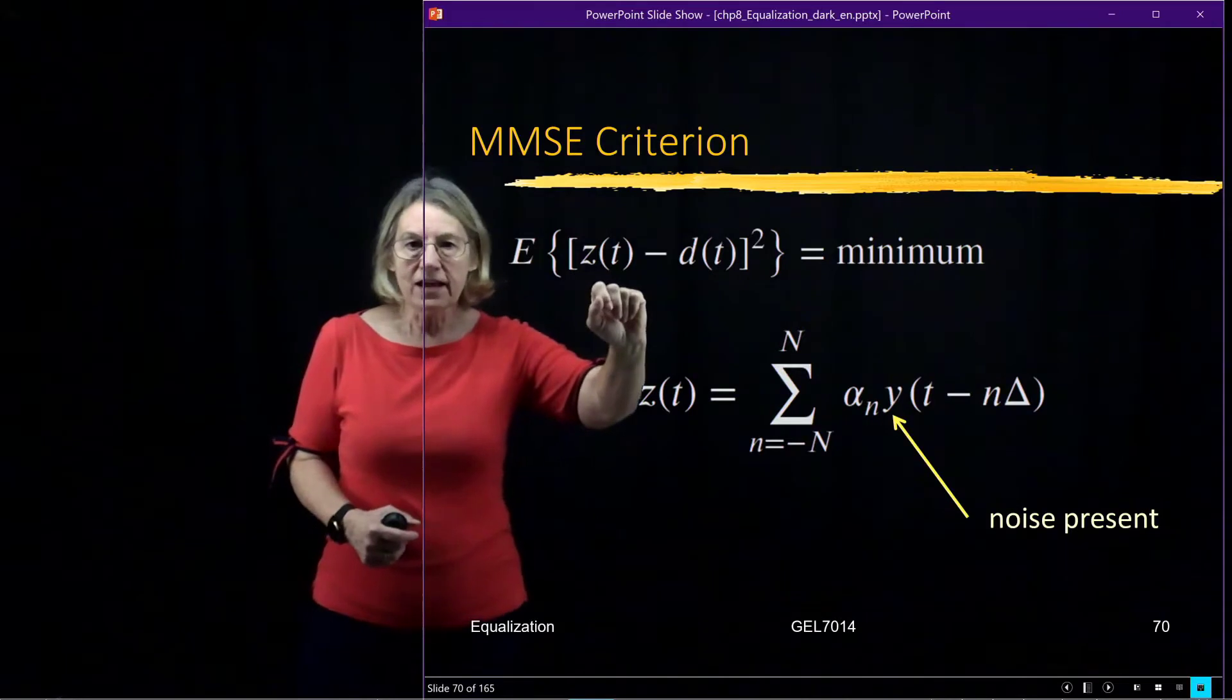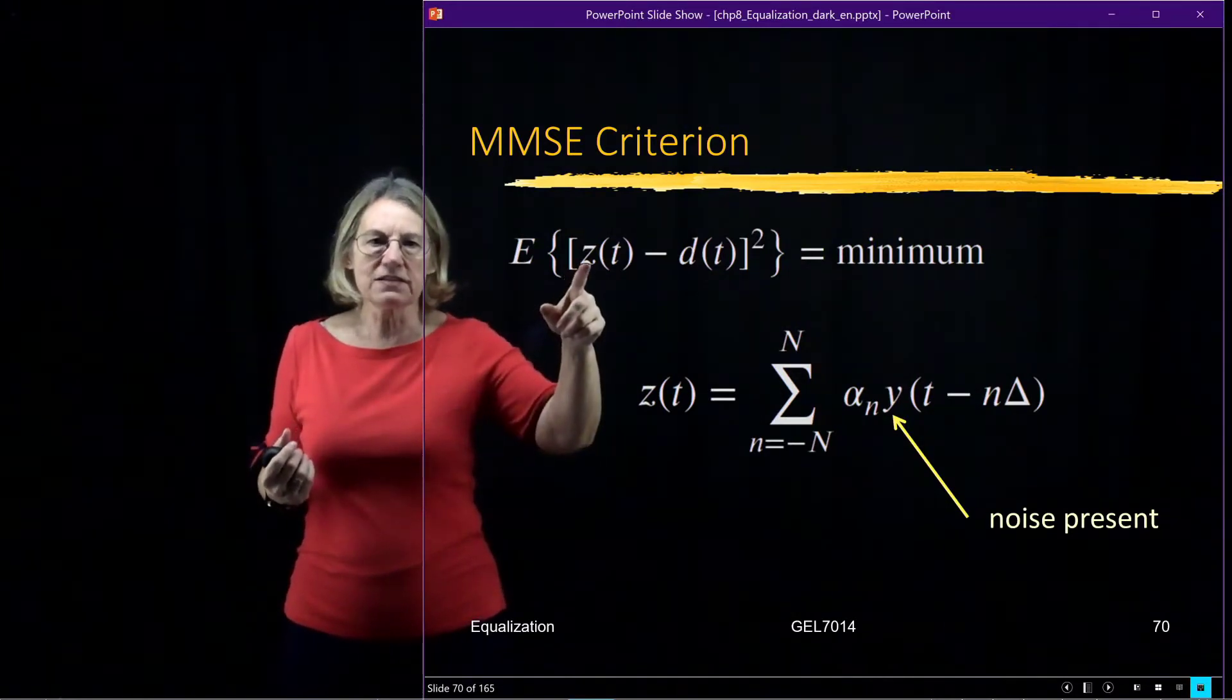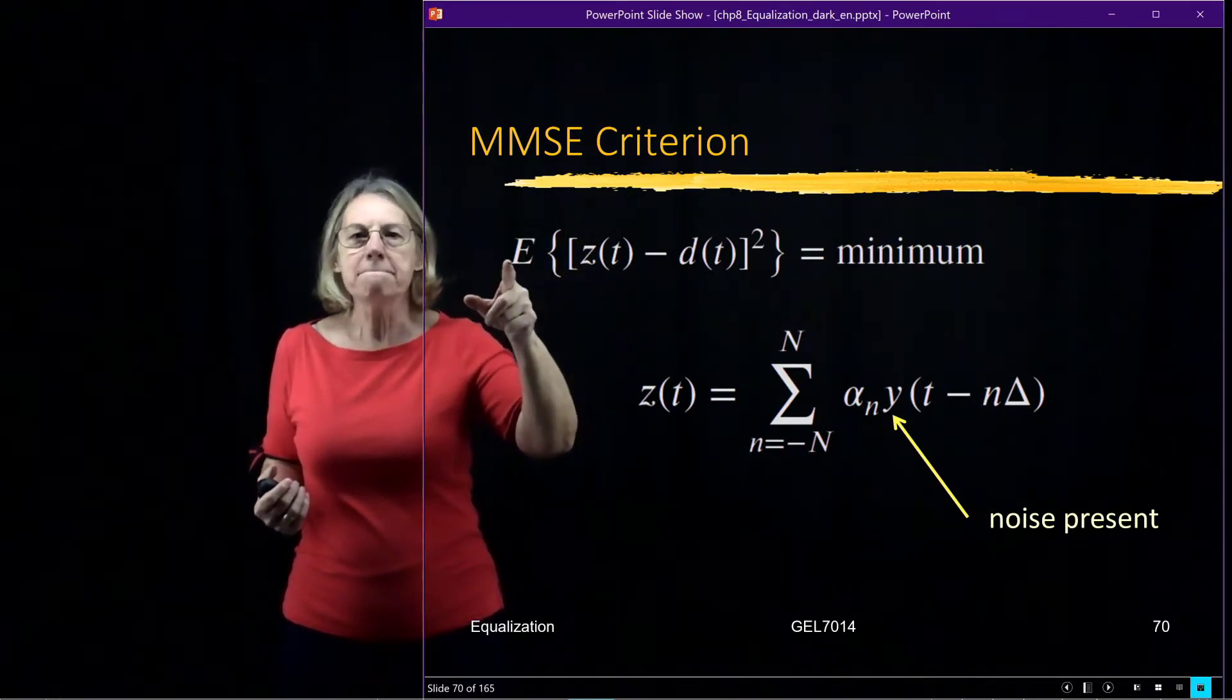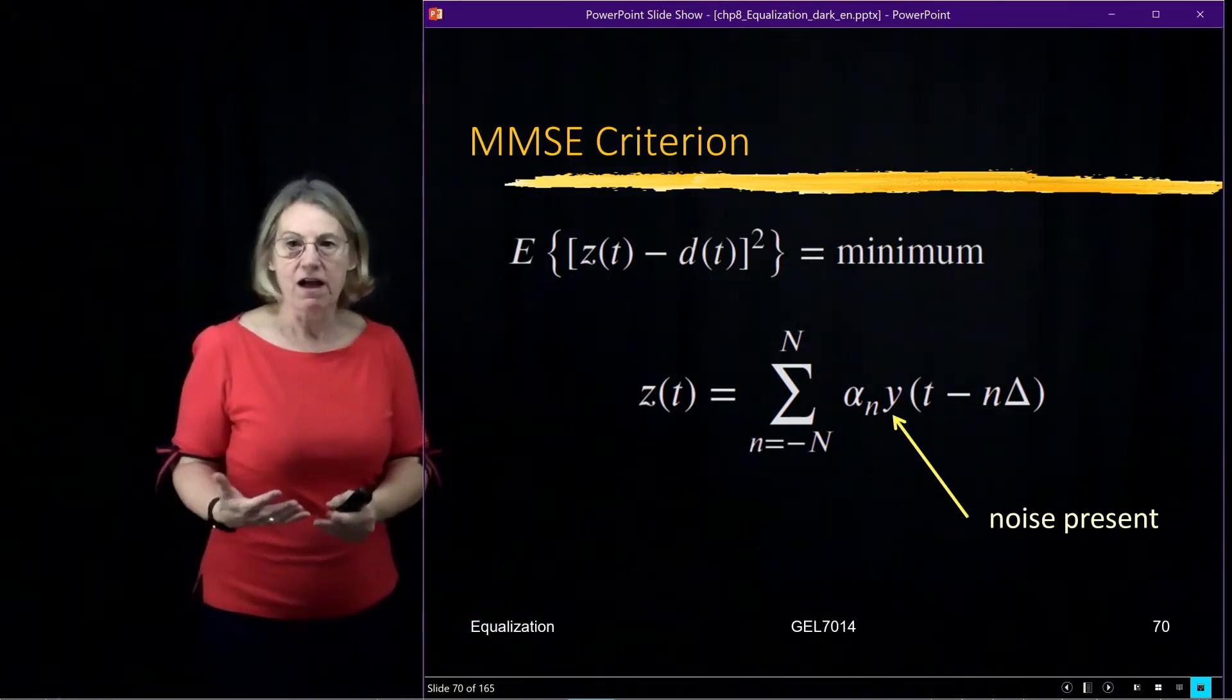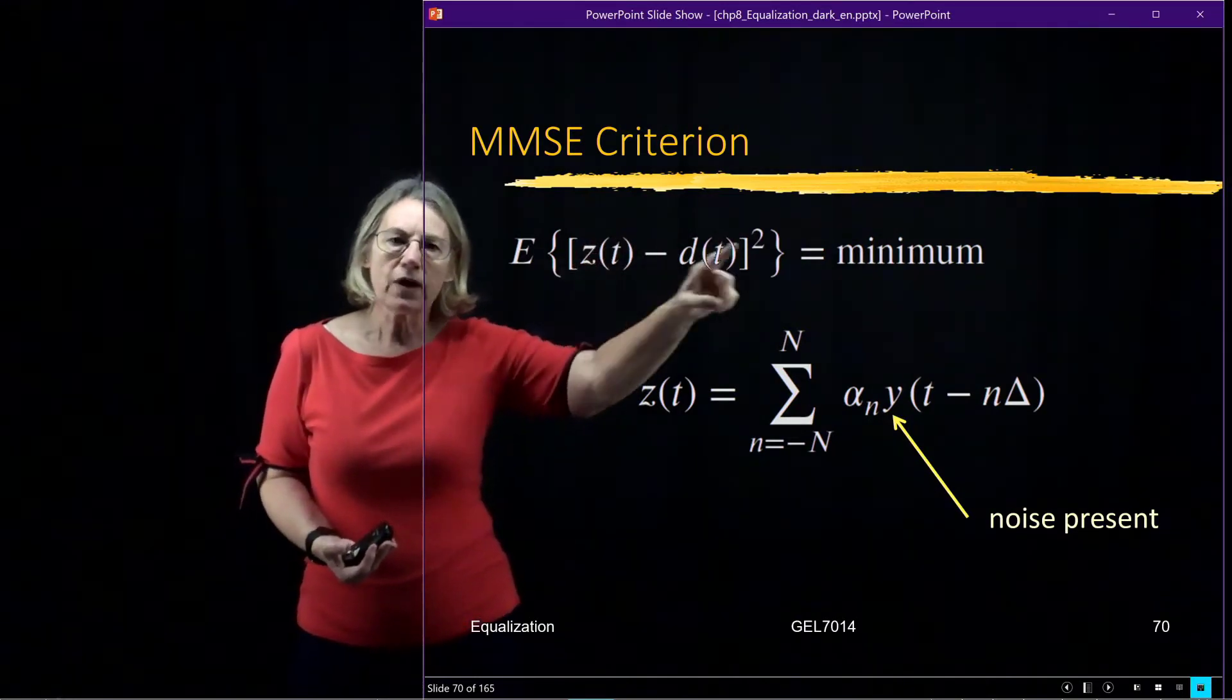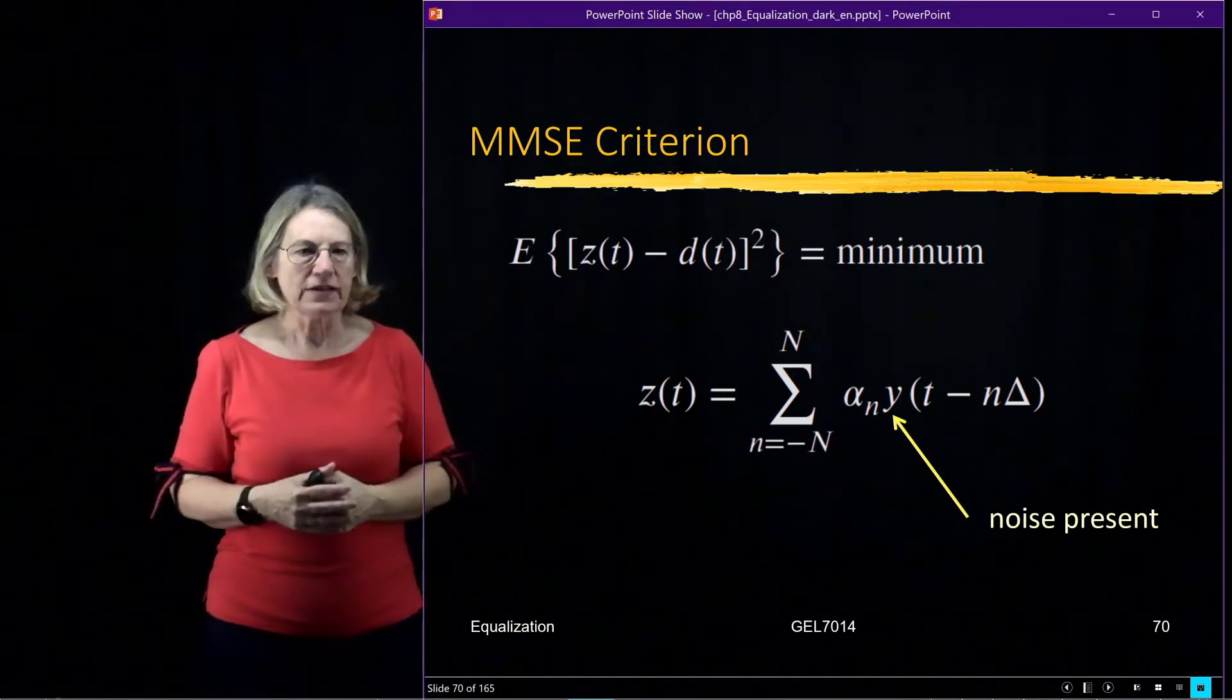Now, the data has random data, which we can model as random data. And of course the received signal has noise in it, which is random. And so when we're talking about the mean squared error, this E represents the expectation operator on a random variable. So this is actually a random process, but we'll sample it and it'll become a random variable. And we're trying to minimize the expected value of this error criteria.